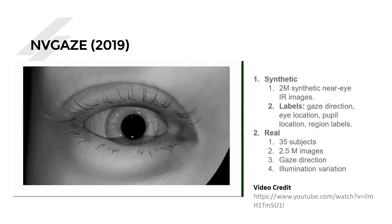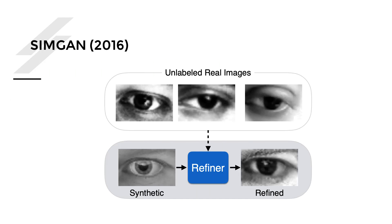NVIDIA also released a real dataset of 35 people with 2.5 million images, including gaze direction and illumination direction. In 2016, a paper called SimGAN pushed a very interesting idea: starting with synthetic data that doesn't look realistic, they used unlabeled real images and GANs to refine synthetic images to look more realistic. The system has two losses — one making images more realistic and one keeping them close to the original synthetic image — producing results that look realistic while retaining the synthetic image's qualities.